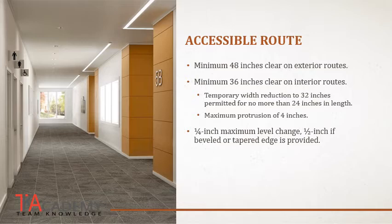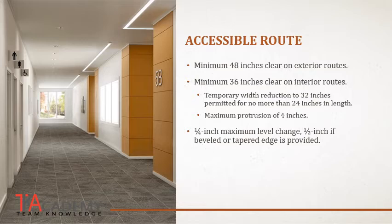There is also a maximum protrusion of four inches into your accessible route. For example, if a door swings outward into an accessible route, the door leaf cannot protrude out into the hallway by more than four inches. Often there is an alcove or pocketed area for the doorway so when it fully opens, it's not protruding into the accessible route. Drinking fountains, which protrude out quite a ways, are also set back in alcove areas. So the 36-inch minimum clearance can accommodate a protrusion of up to four inches, leaving a minimum clear of 32 inches, but that can occur for no more than 24 inches along the length of the corridor.